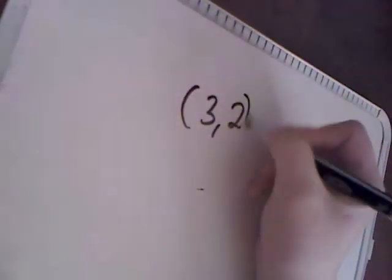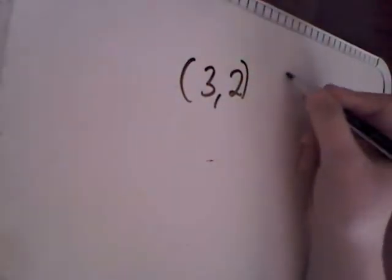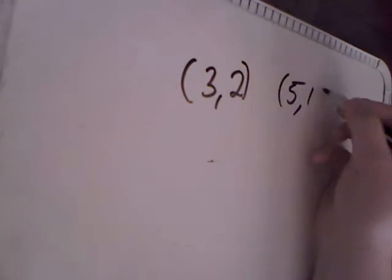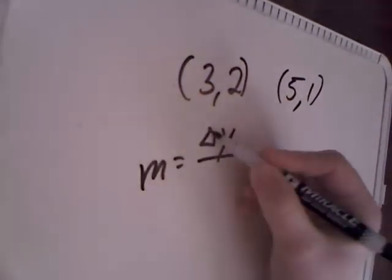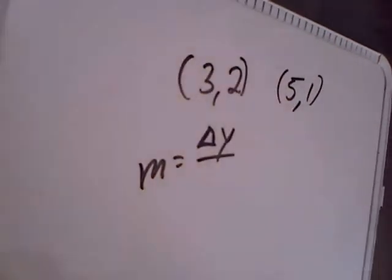Let's take a look at the point (3, 2) and (5, 1). Now remember that slope is the difference of y. This sign, this triangle, is a delta sign.